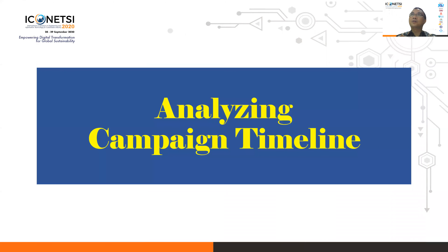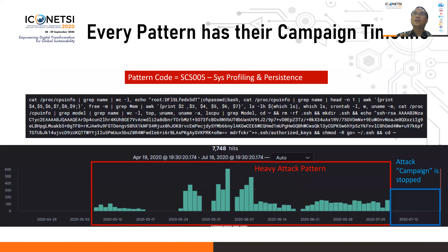We can observe attacker activity along a campaign timeline — attackers interact with a honeypot, stop, and then attack again later. For example, threat campaign SCS005 involves system profiling and persistence. It shows a very heavy pattern, found in May, repeated in June, and again in July, after which it appears to have stopped altogether.